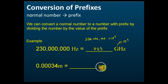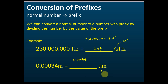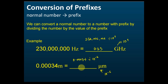Next example: 0.000034 micrometer. We write 0.000034, and micro is equal to ten to the power of negative six, so we divide it by ten to the power of negative six. The answer becomes 34.